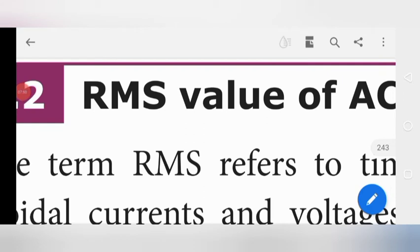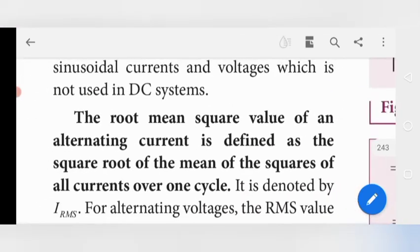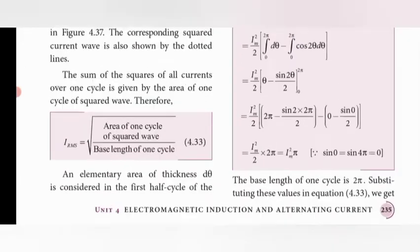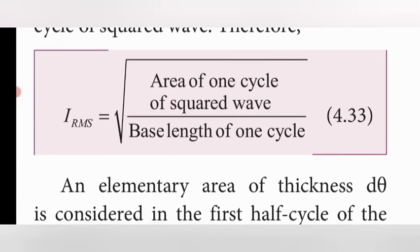Another method for finding the value of AC current is the RMS value, that is Root Mean Square. The RMS value means the square root of the mean of the squares of all currents over one complete cycle — positive or negative. The formula is: I_rms = square root of (area of one cycle of the squared wave divided by the base length of one cycle).